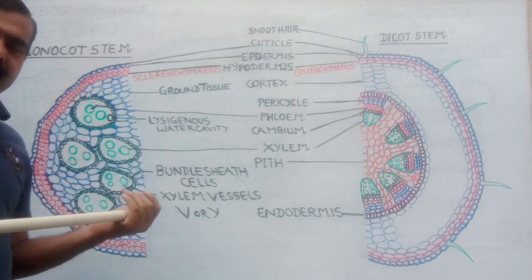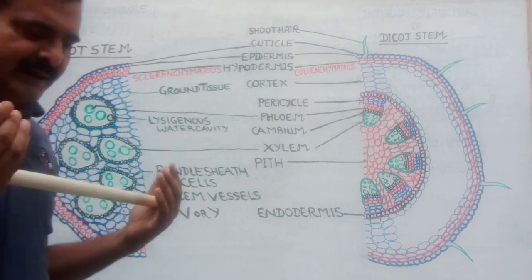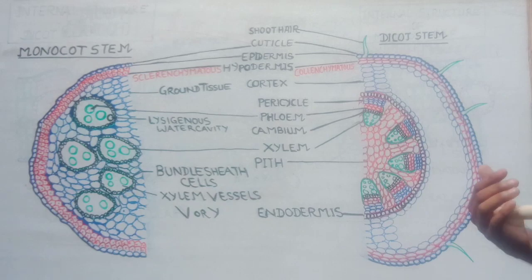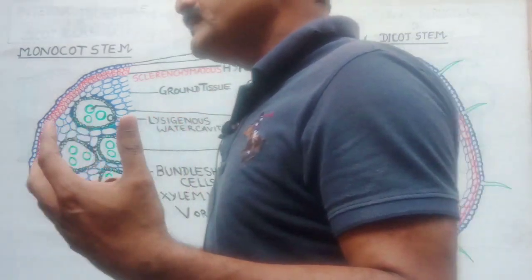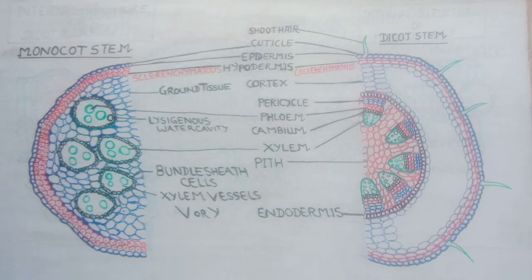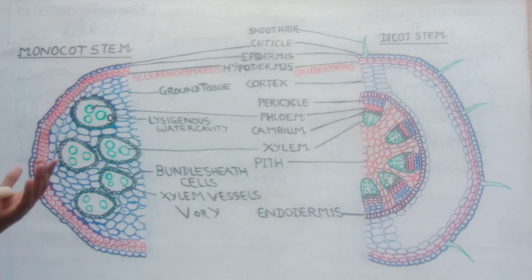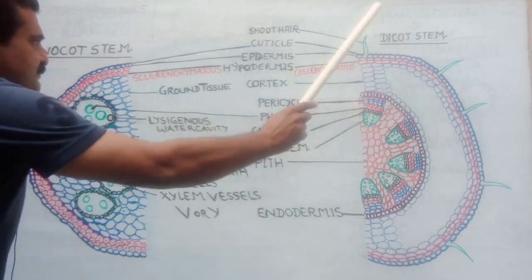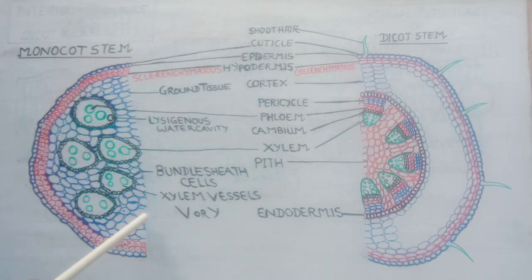Today's lecture is the comparative study of dicot and monocot stem. In previous lectures I have already discussed the vascular bundle in case of dicot and monocot. In the very first lecture of anatomy we learned that conjoined collateral vascular bundles are of two types — open and closed. The conjoined collateral open type is in case of the dicot stem, and this is the internal structure of the monocot stem.